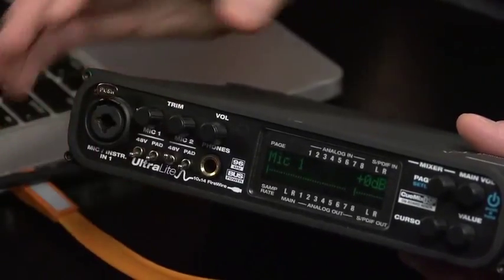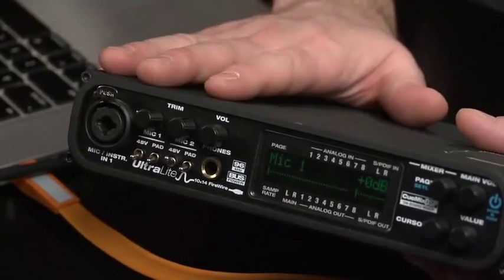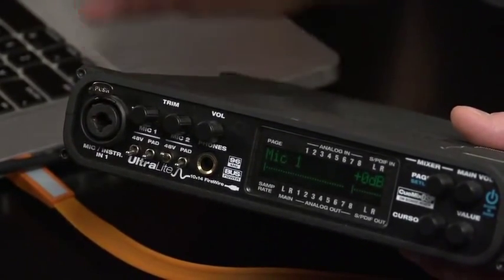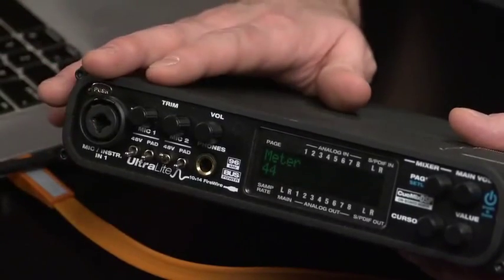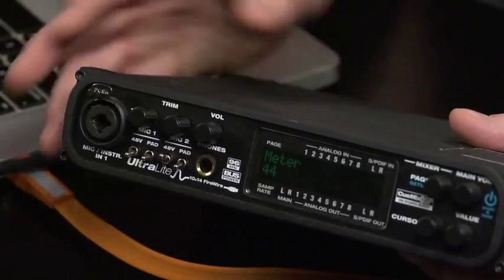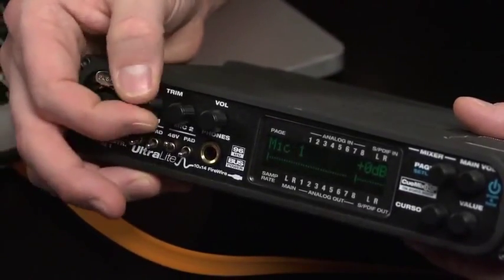The first thing you want to do, after you get your interface working with your computer, is reduce the input gain all the way down. Now the input gain is going to be the most important knob you're going to adjust while recording, because this is going to set the level that gets to the A to D converter, the analog to digital converter. And it will almost always be a knob on the outside of the device that you have to manually control. We're going to set that all the way to zero, so I'm turning that input gain all the way down.